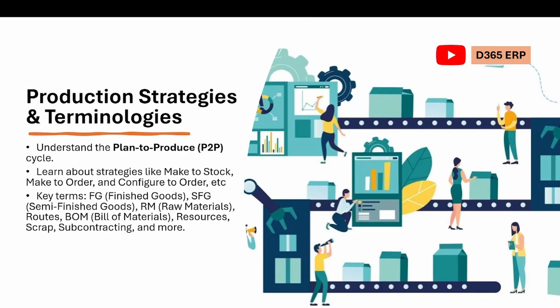In the same episode we will also discuss the Plan to Produce (P2P) cycle. If you are from a manufacturing background you know P2P in manufacturing is different from the Procure to Pay cycle. Then we will learn about manufacturing strategies like make to order, make to stock, configure to order — there are mainly six types of manufacturing strategies. We will discuss all six with scenarios explaining when to use each one.